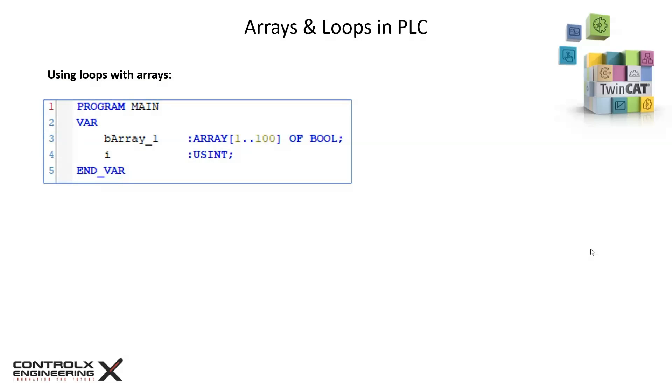Using loops with arrays. Loops are commonly used with arrays. A for loop can be used to easily fill an array or read the values in an array. In this example we have an array with a hundred boolean elements.